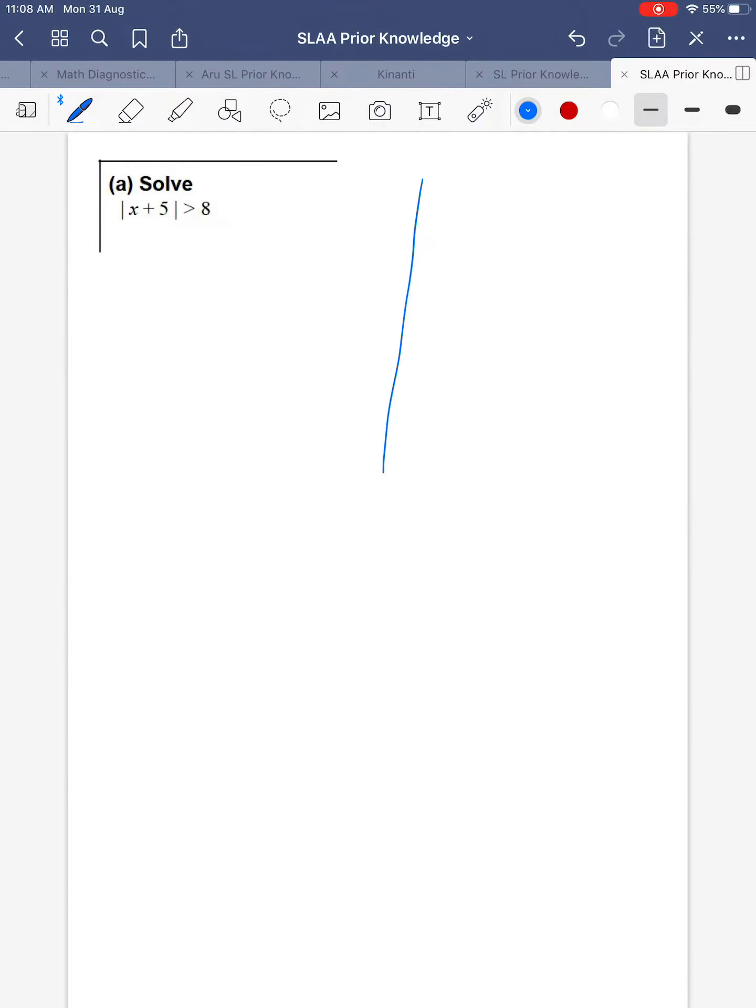Okay, so we can see this from a graph actually. If we understand what the absolute value graph looks like,